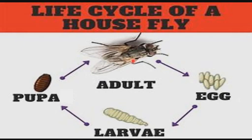The fly rests until its wings are unfolded and its body hardens before it can move. When it finds a partner and mates, the process of the female laying eggs starts again, and so the life cycle keeps going around. In the life cycle of a housefly as complete metamorphosis we have the eggs, the larva, the pupa stage which is the resting stage, and the imago.